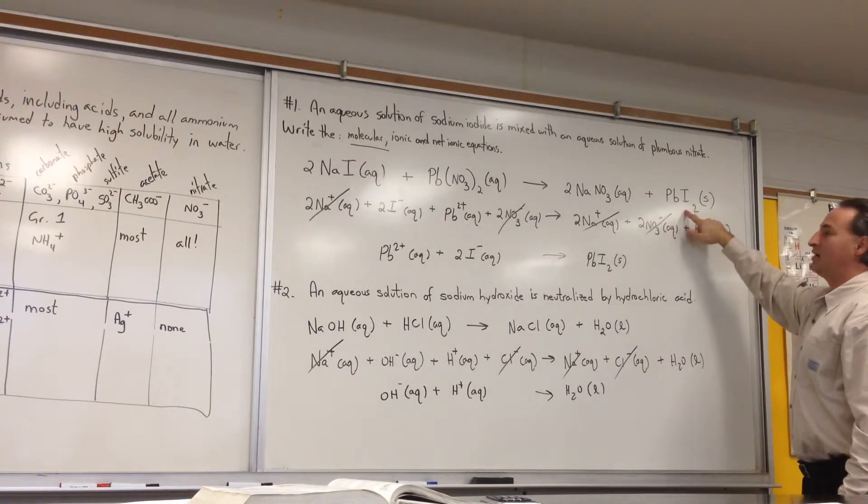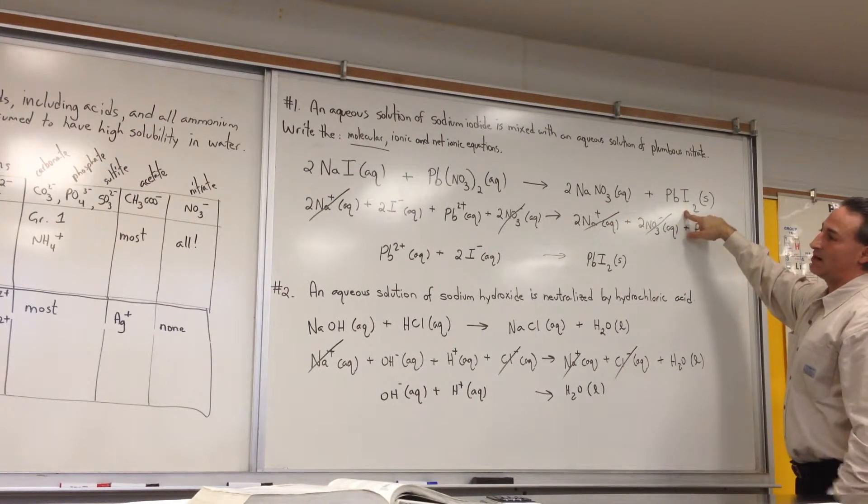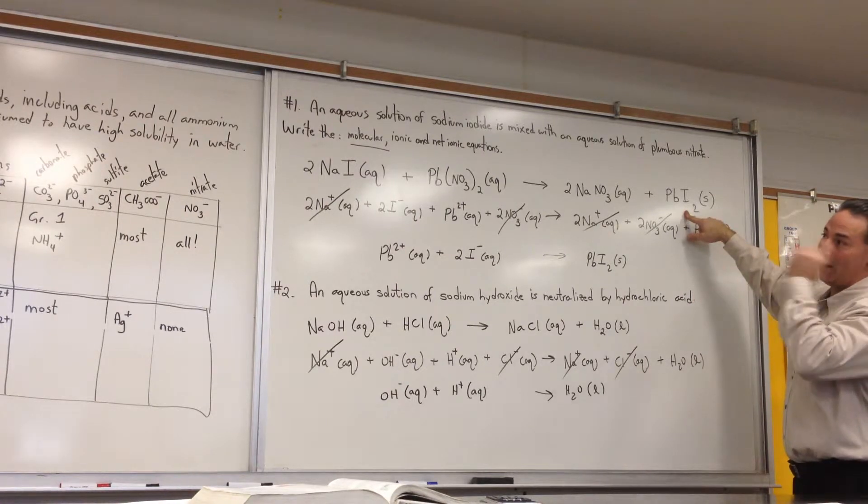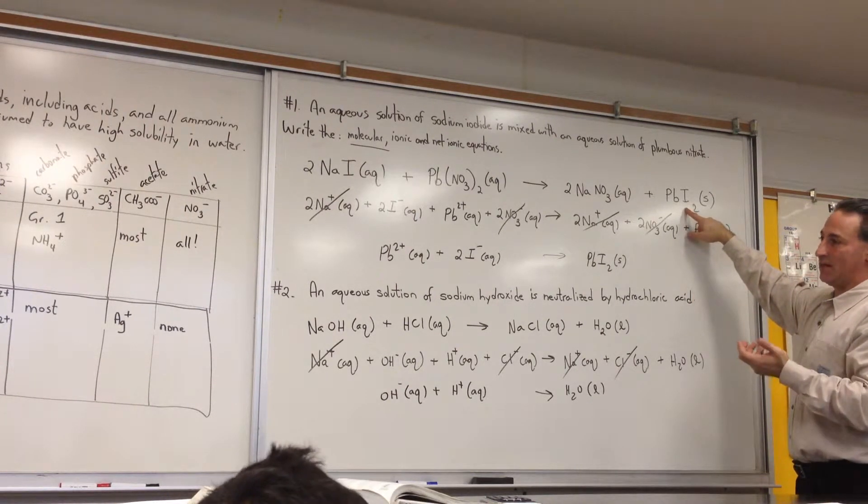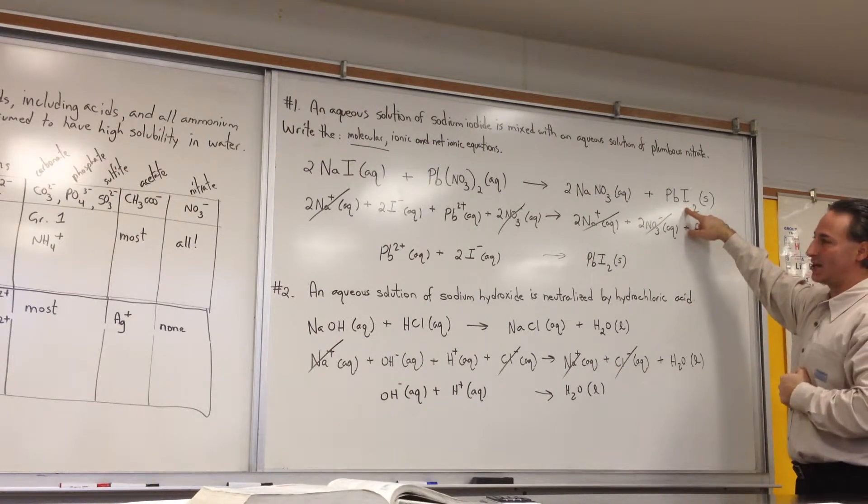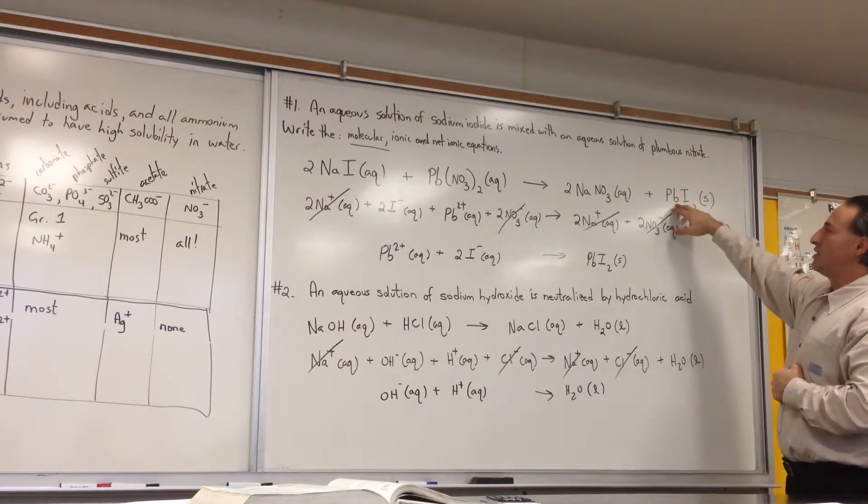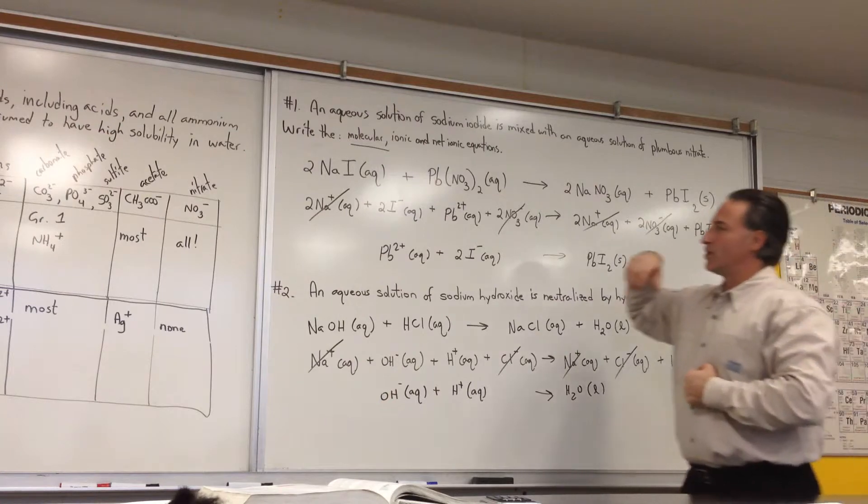On the other hand, iodides - most iodides of heavy metals, like lead, are insoluble. So we're going to predict that this is going to form a solid. And in fact, it does. You get a yellow precipitate when you do this reaction. So this is the molecular version of the equation.